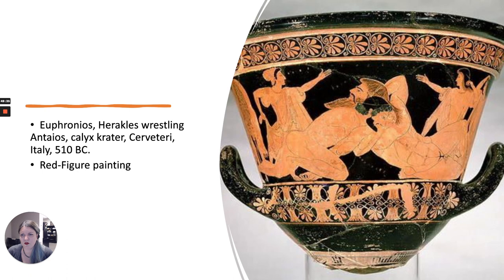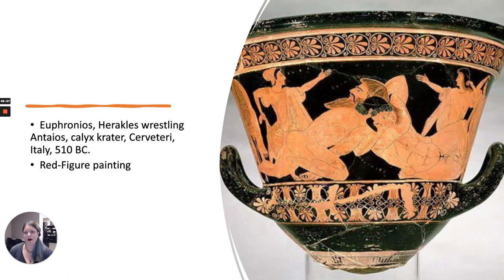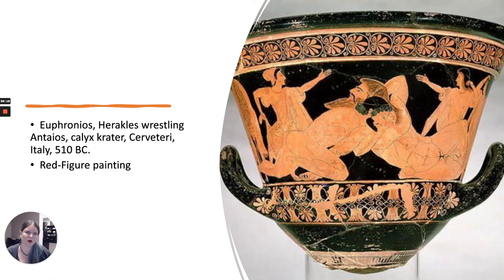Another famous painter at this time is Euphronius, who is the most famous figure for red figure painting. This is a bit bleached over time, so it doesn't look as red as it originally would have. You can see this is a very detailed portrayal — they're starting to think more about perspective and human anatomy. We have Heracles wrestling Antaeus here, depicted in red on a black field, and it's polychromatic — you can see a little bit of green in the headpiece and in the decoration of the crater itself.